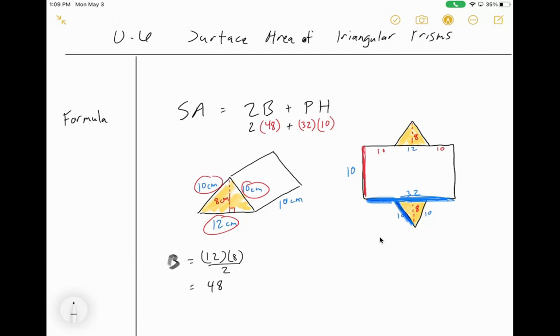So now let's put it all into our calculators. We know that one triangle right here is going to be 48, we know the other triangle is also 48, and we know that the big rectangle is 32 times 10, which is going to be 320. Let's go ahead and add up all of these: 48 plus 320 plus 48. I get 416.